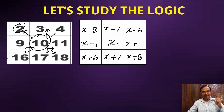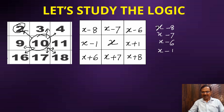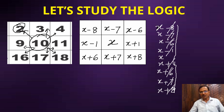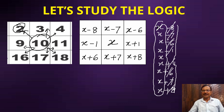Now let's total everything up: X minus 8, X minus 7, X minus 6, X minus 1, X, X plus 1, X plus 6, X plus 7, and X plus 8. When you add all these numbers, minus 8 and plus 8 cancel, minus 7 and plus 7 cancel, minus 6 and plus 6 cancel, minus 1 and plus 1 cancel — everything cancels. So we are left with only 9X.